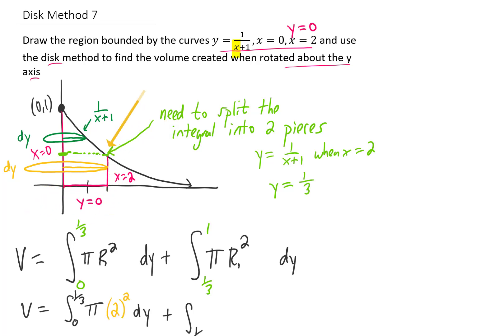In our second region, our y value is between one third and one, and you'll notice that the radius, again, is given by the function y equals one over x plus one.